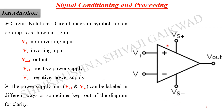The power supply terminals, Vs-plus and Vs-minus, can be labelled in different ways or sometimes kept out of the diagram for clarity. If the power supply is not shown on the circuit diagram, it does not mean it is not connected — the operational amplifier must have external power sources, also referred to as plus and minus Vcc, to drive the input signal to the output. At the input stage there are two differential inputs and only a single-ended output. This operational amplifier is the basic fundamental unit of any signal conditioning and processing system.